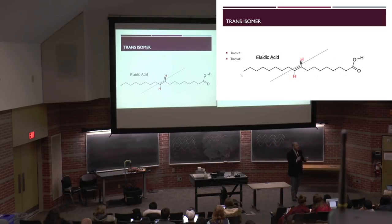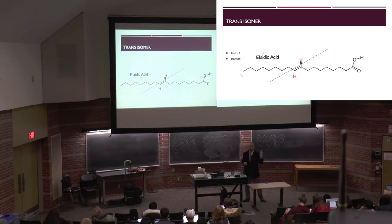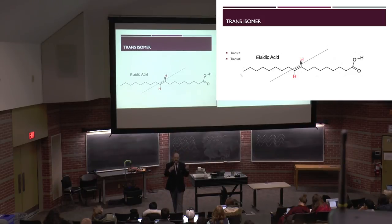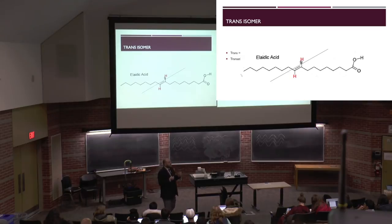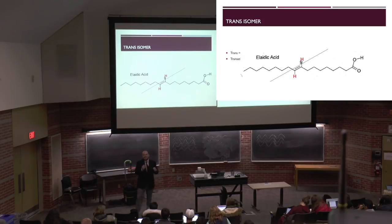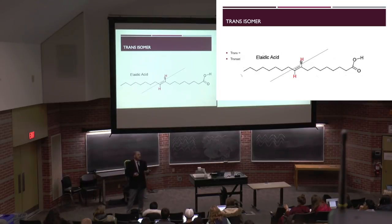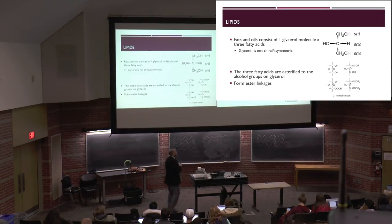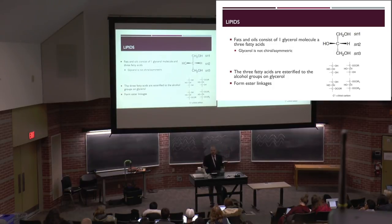Trans fats are naturally found in the milk of ruminants — very low in meat, quite high in milk. We have two predominant trans fats in our food supply: transvaccenic acid and conjugated linoleic acid (CLA). Both are products of the dairy industry. There's a lot of contrasting literature on whether those trans fats are as detrimental as trans-elaidic acid, which is predominantly found from the hydrogenation of oilseeds like canola, rapeseed, and sunflower.